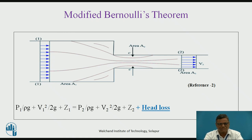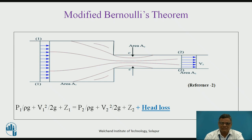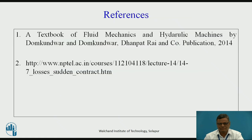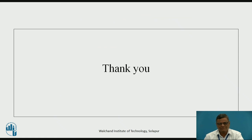The modified Bernoulli's equation is: p₁/ρg + v₁²/2g + z₁ = p₂/ρg + v₂²/2g + z₂ + h_L, where h_L is the head loss between section 1 and section 2. These are the references. Thank you.